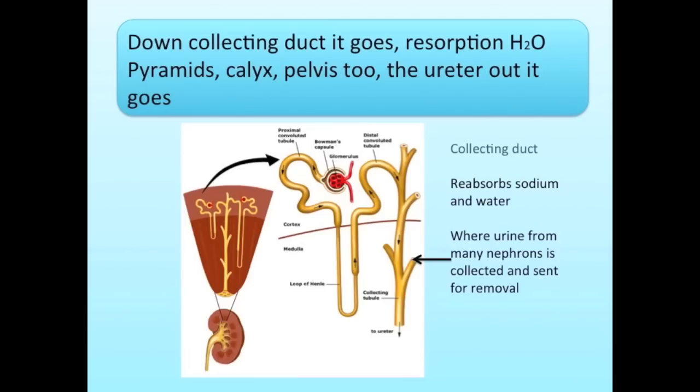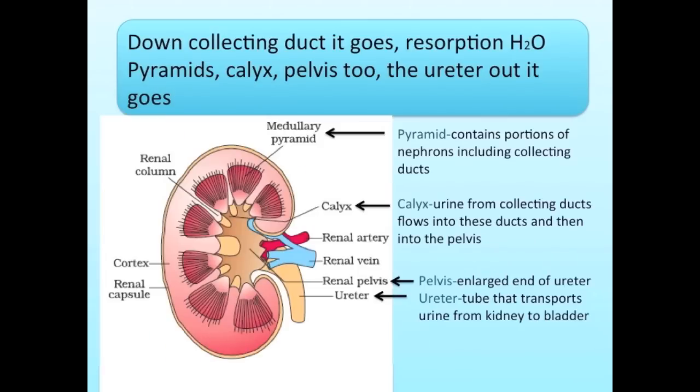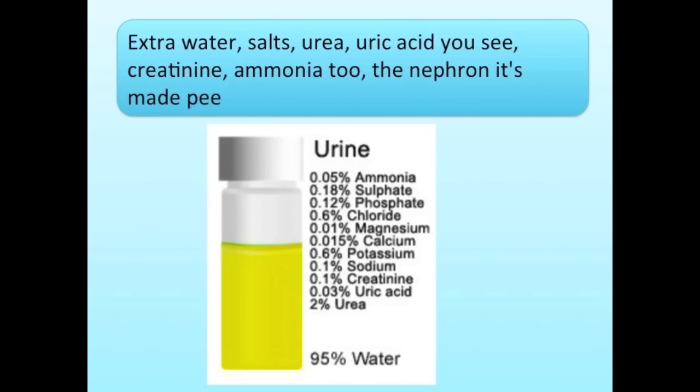Down the collecting duct it goes — resorption of H2O. Pyramids, calyx, pelvis to the ureter, out it goes. Extra water, salts, urea, uric acid, creatinine, ammonia — to the nephron it's made.